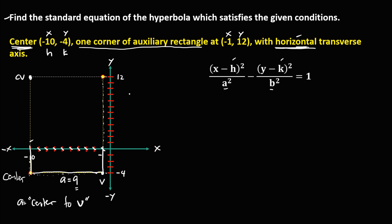To solve for b, recall that b is the distance from the center to the co-vertex. Counting from the co-vertex to the center on the graph — 1, 2, 3, 4, 5, 6, 7, 8, 9, 10, 11, 12, 13, 14, 15, 16 — so therefore b is equal to 16.